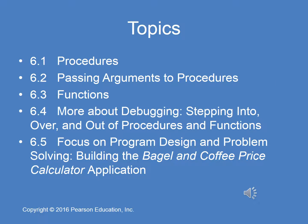Here are the topics for chapter six. In the first half, we're going to focus a lot of attention on procedures and functions. Event handlers are a type of procedure — they perform a task. They're similar to functions, but different because a function is a series of statements that performs a task, is called from the program, and returns a specific value where it's called from. We'll also get into debugging and stepping into, over, and out of procedures and functions. Then we'll finish with a problem-solving activity — building the bagel and coffee price calculator application — in the second lecture for chapter six. So let's get started with procedures and functions.